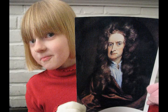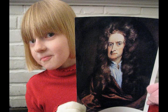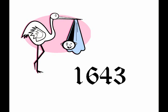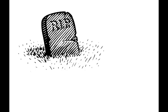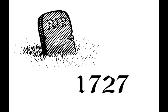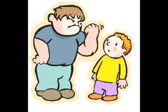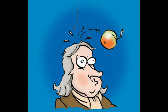Sir Isaac Newton was one of the most influential men in human history. He was born in January of 1643, died at the ripe old age of 84 in 1727, and was confounded by bullies his whole life.